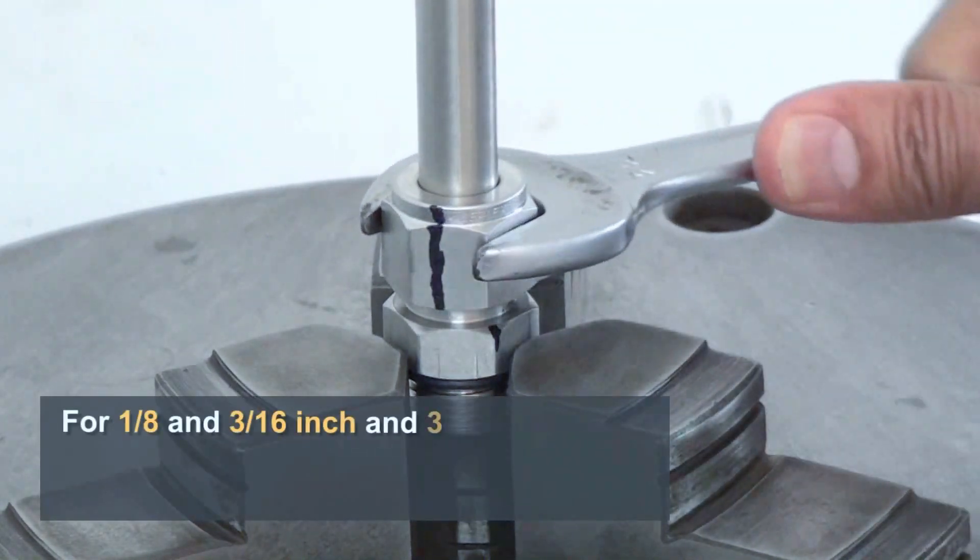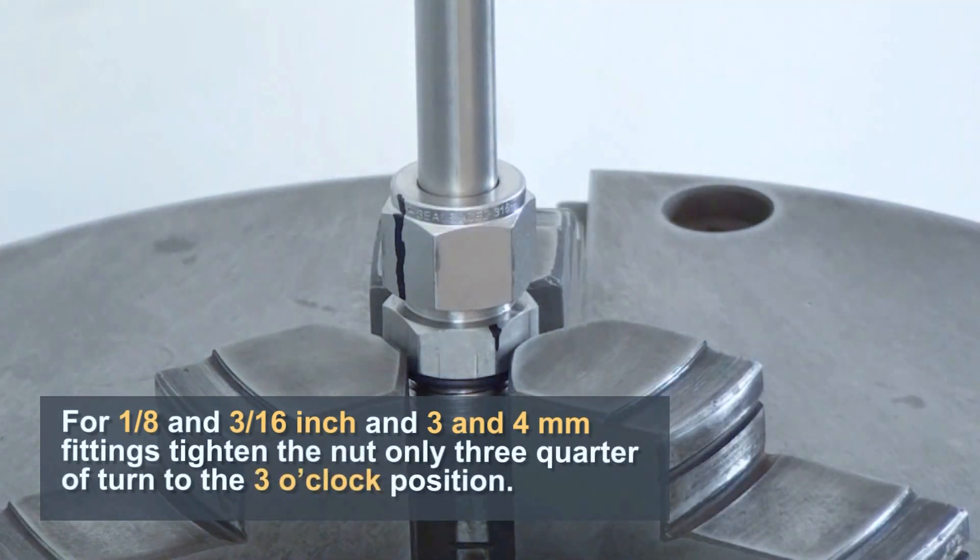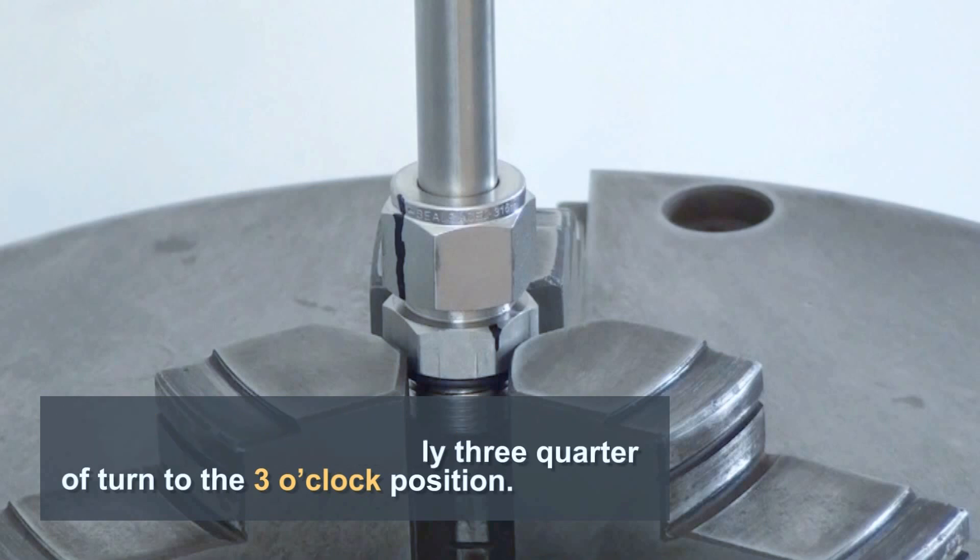Step 3. For 1/8 and 3/16 inch and 3 and 4 mm fittings, tighten the nut only 3 quarters of a turn to the 3 o'clock position.